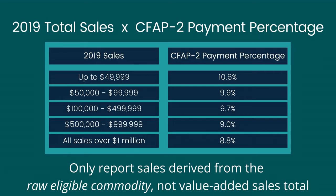For example, if you grow tomatoes that you then process and sell as salsa, you may only report the portion of sales that is reasonably considered to be derived from the tomatoes alone, and not the end value-added product.